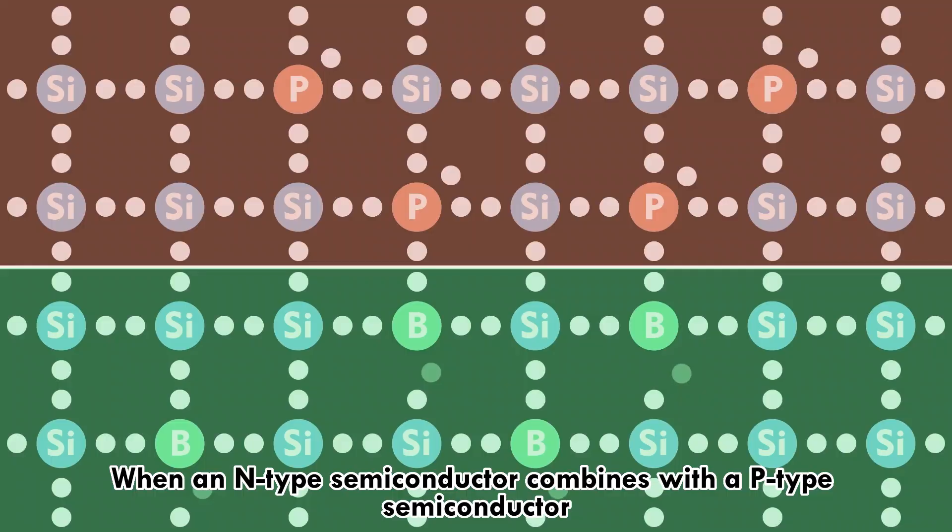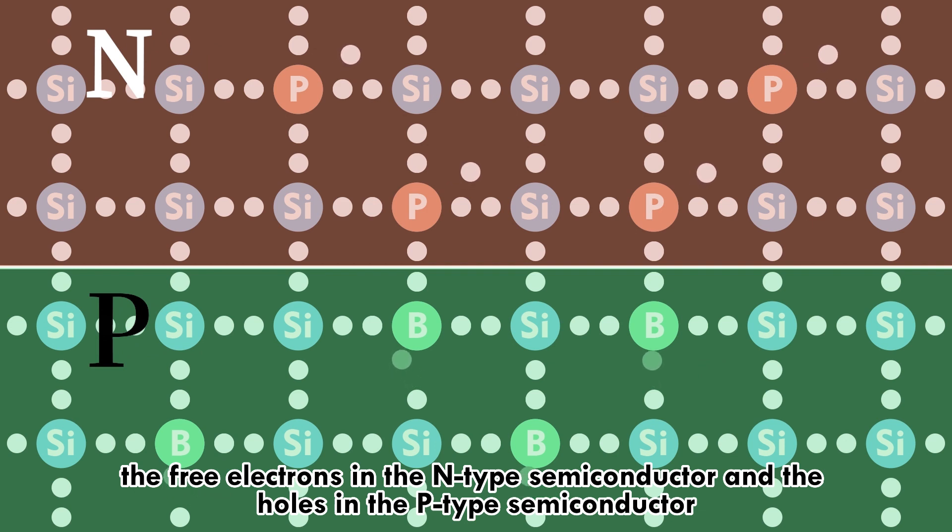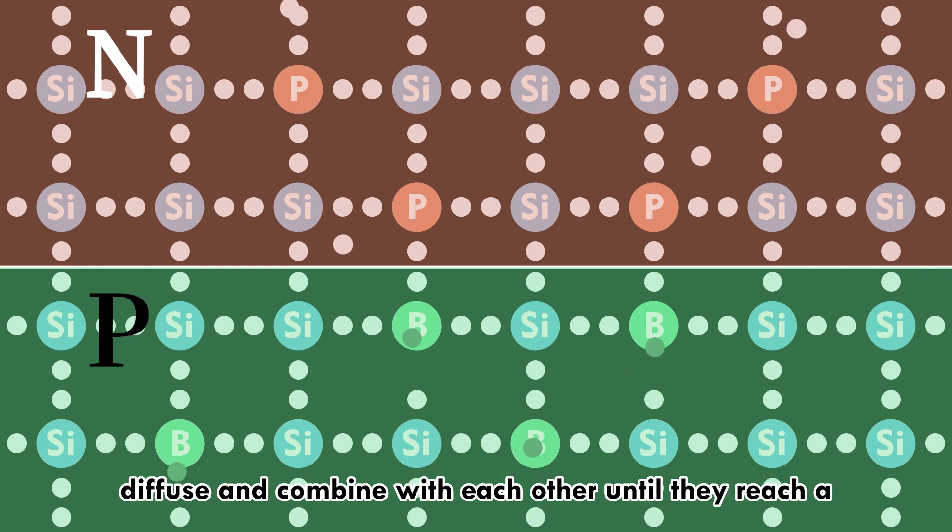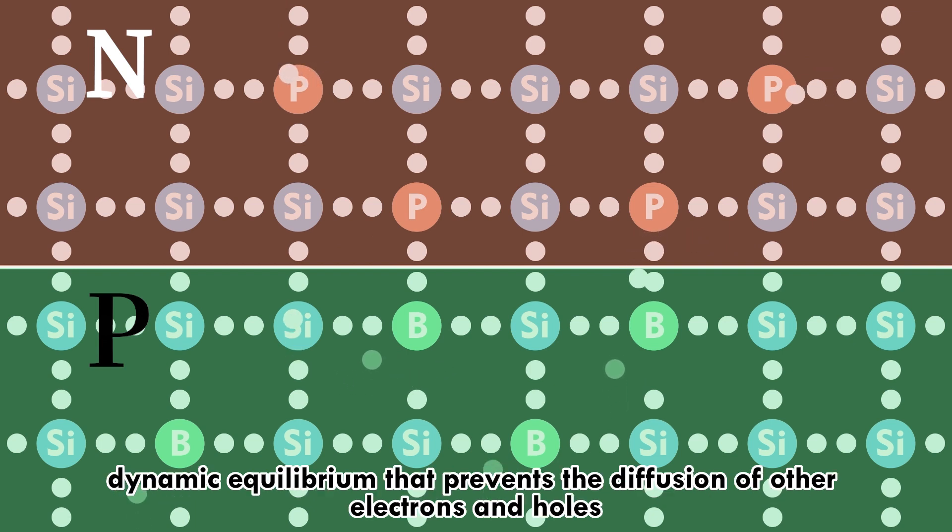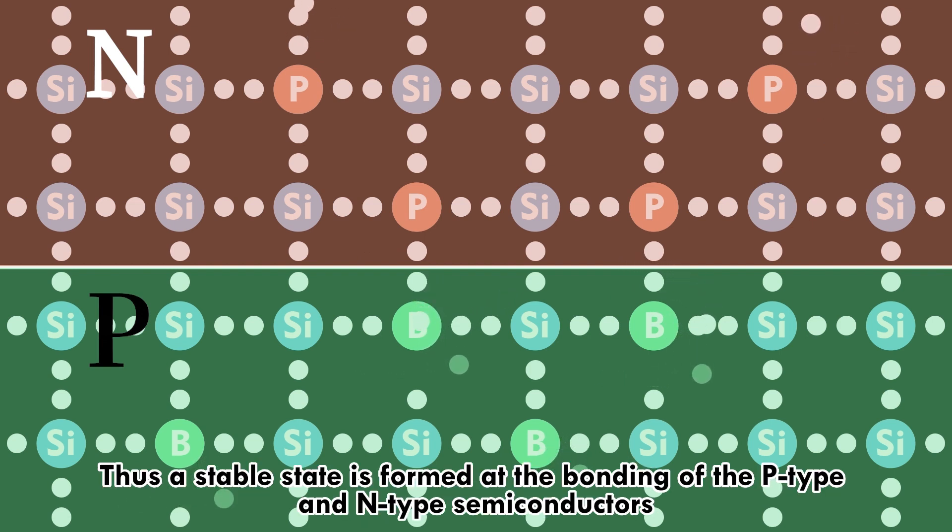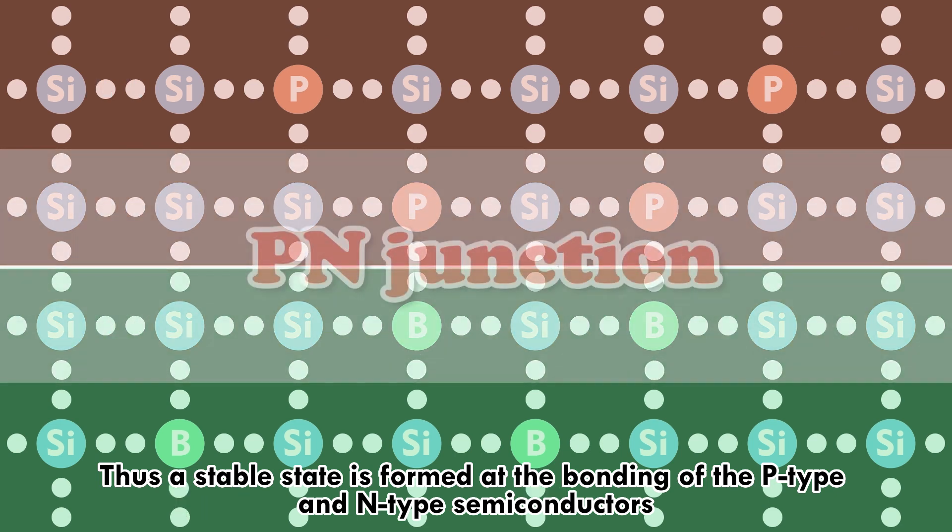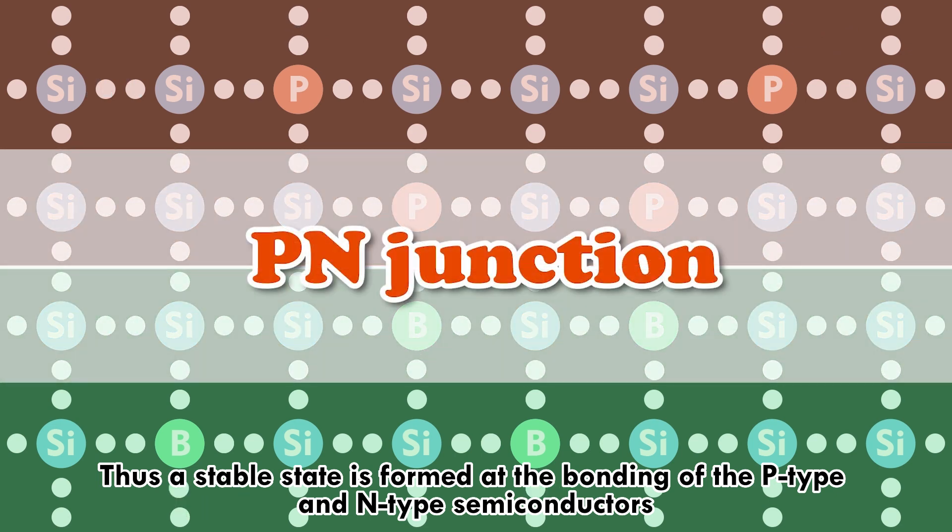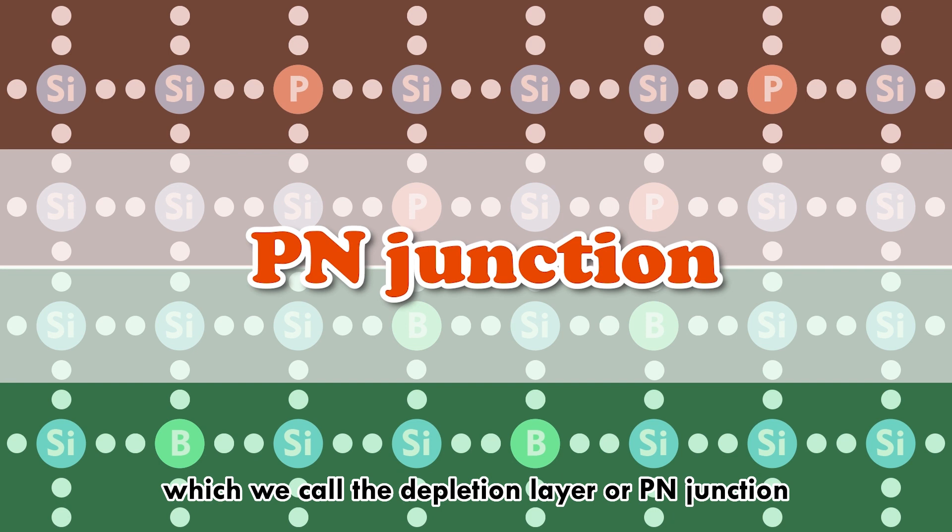When an n-type semiconductor combines with a p-type semiconductor, the free electrons in the n-type and the holes in the p-type diffuse and combine with each other until they reach a dynamic equilibrium. Thus, a stable state is formed at the junction of the p-type and n-type semiconductors, which we call the depletion layer, or p-n junction.